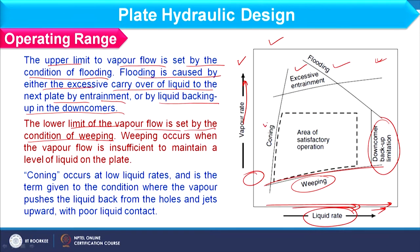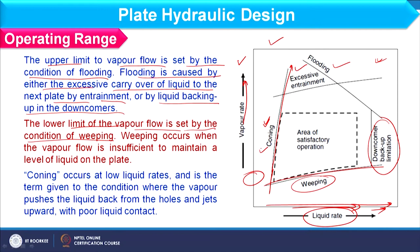Another condition is coning, which happens when liquid flow rate is low and vapour flow rate is very high. What happens is vapour simply passes through the liquid without any further interaction with the liquid over the plate — vapour passes like a jet through the hole, making a cone shape and moving upward without interacting. That condition is also undesirable as far as plate design is concerned. Considering all these limitations, we can finally determine the area where the plate can be operated satisfactorily.